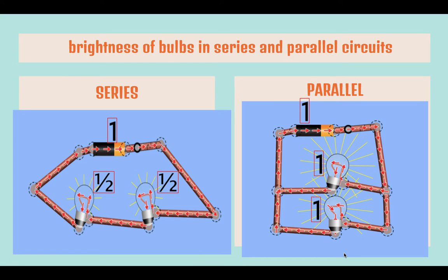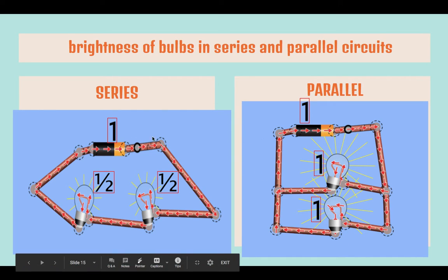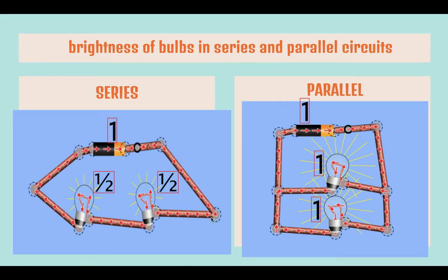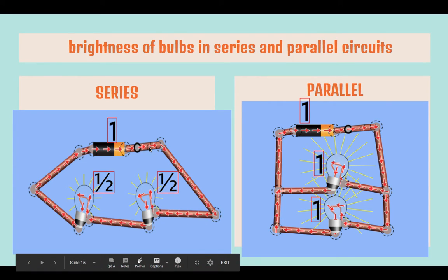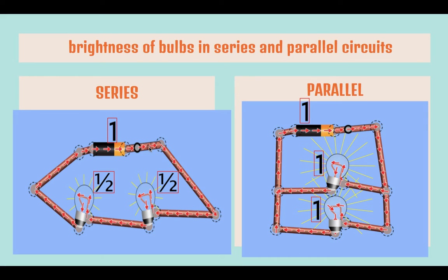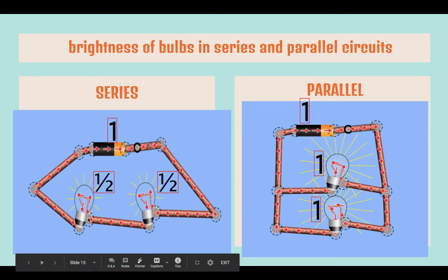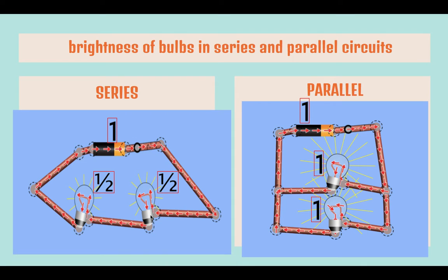In a series circuit, current has only one path to flow through. Taking one unit as the battery's power, the battery's power has to be shared between the two bulbs. Thus, both bulbs will receive half a unit of the battery's power. The battery's power is shared equally, and hence both bulbs will be less bright.